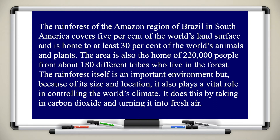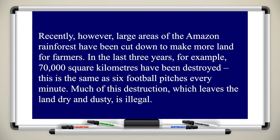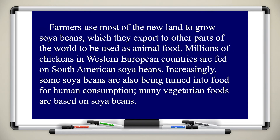It does this by taking in carbon dioxide and turning it into fresh air. Recently, however, large areas of the Amazon rainforest have been cut down to make more land for farmers. In the last three years, for example, 70,000 square kilometers have been destroyed — the same as six football pitches every minute. Much of this destruction, which leaves the land dry and dusty, is illegal.